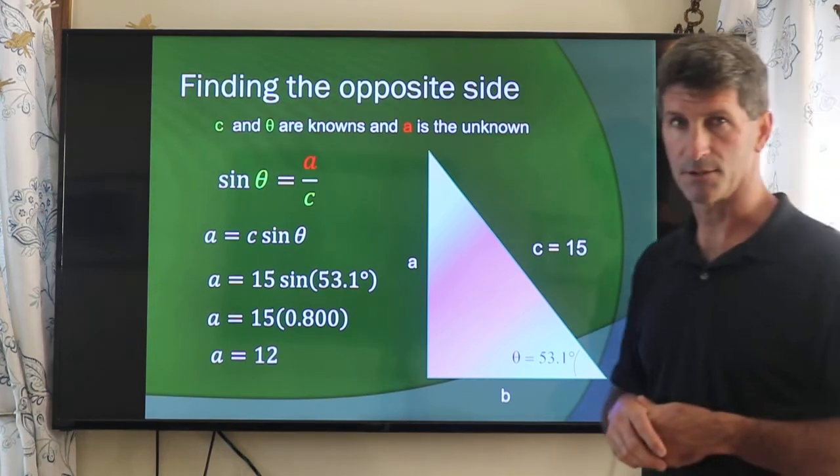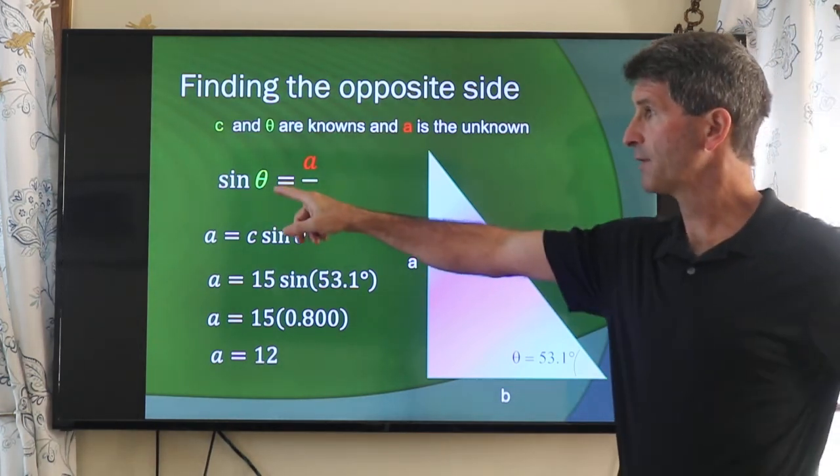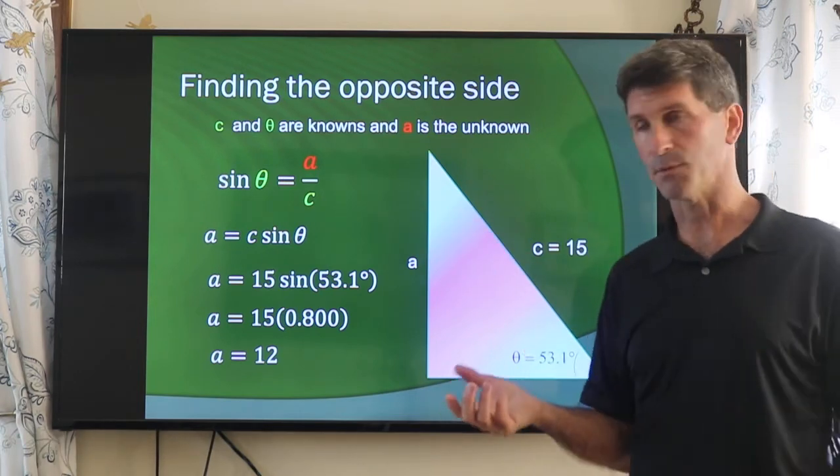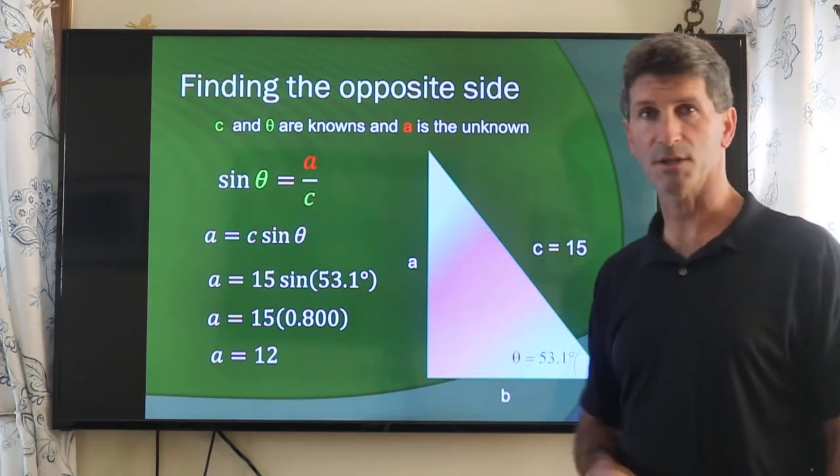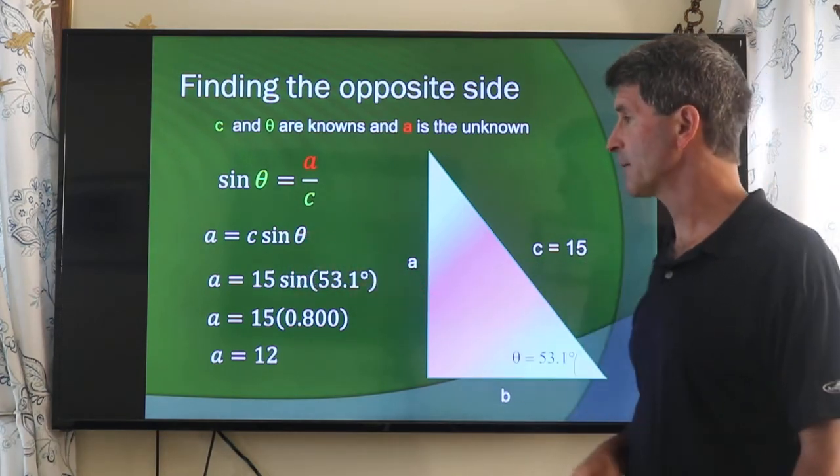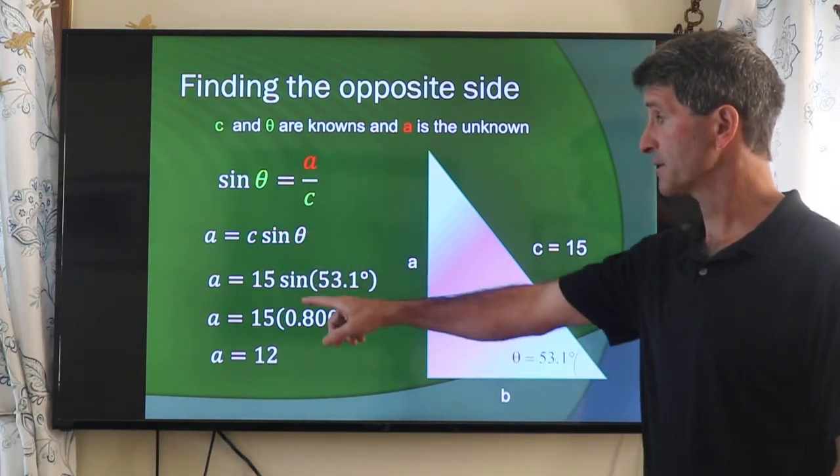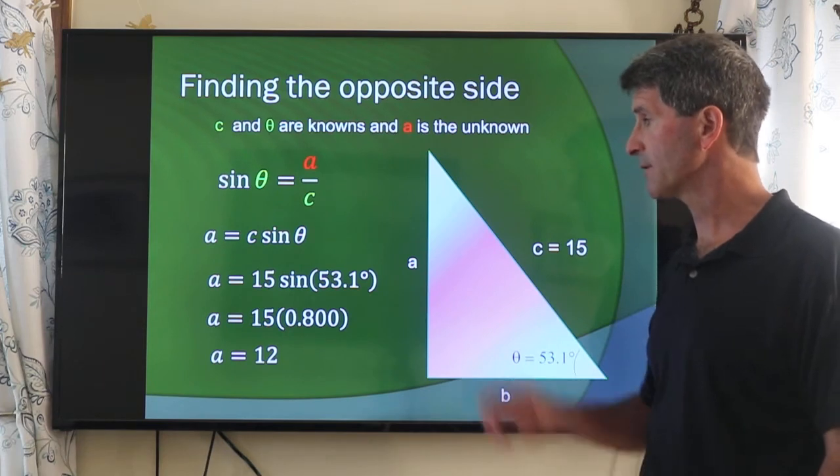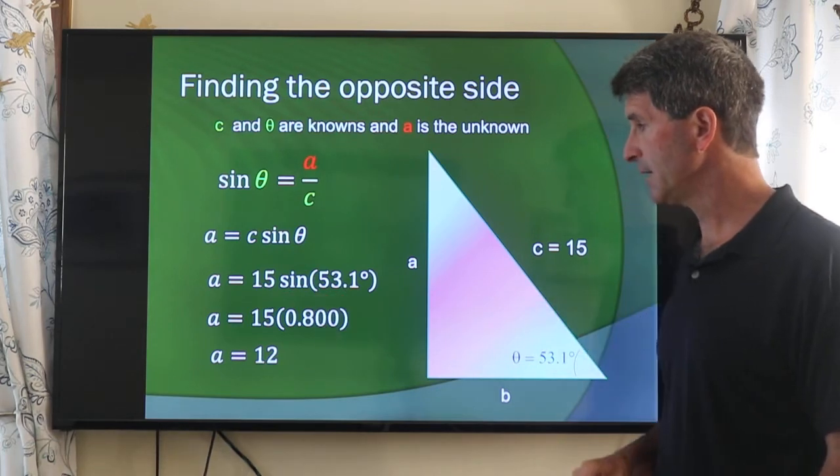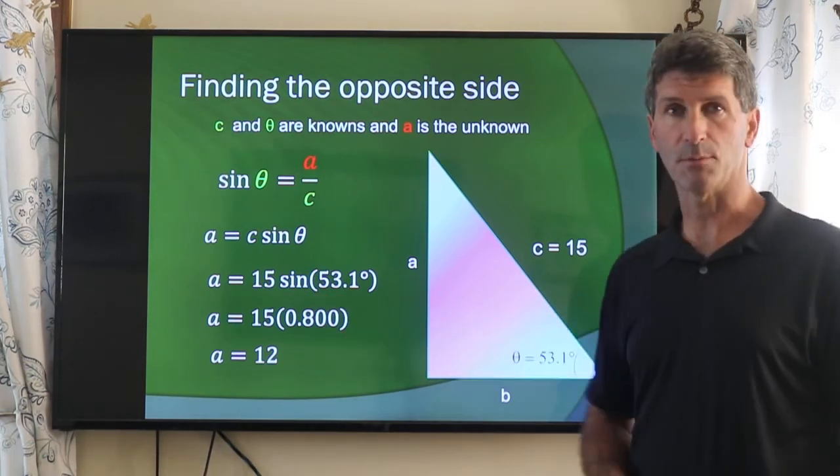So c, the hypotenuse, is 15. Sine θ is a over c. We want to solve for a. So algebraically, we just multiply both sides by c. So a is equal to c times sine θ. We take the sine of 53.1 degrees. We find out that it's 0.8. 0.8 times 15 gives me 12.